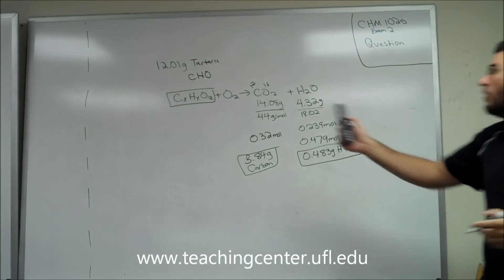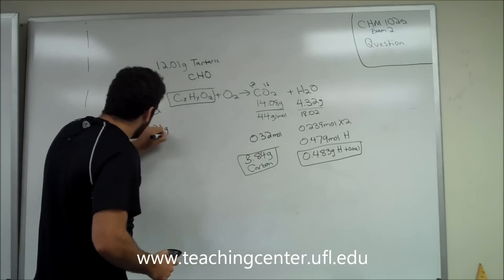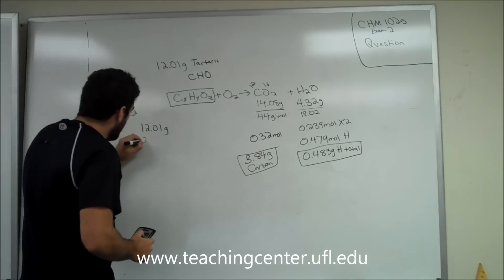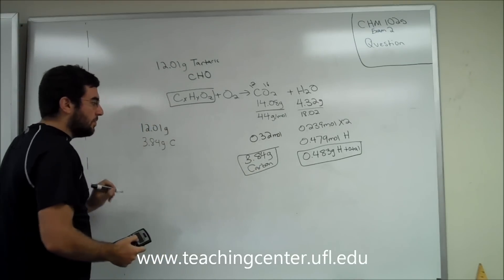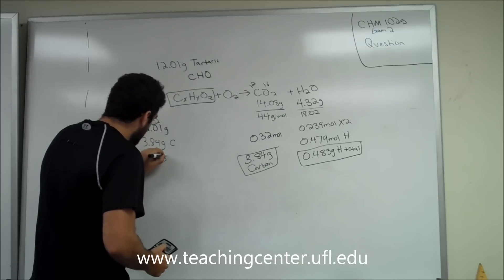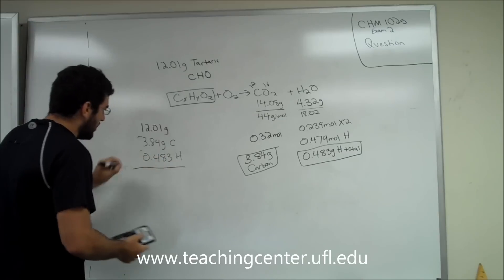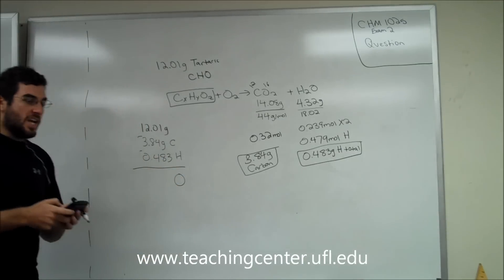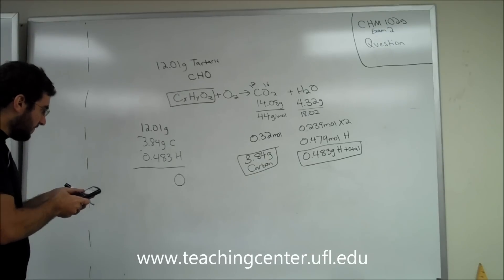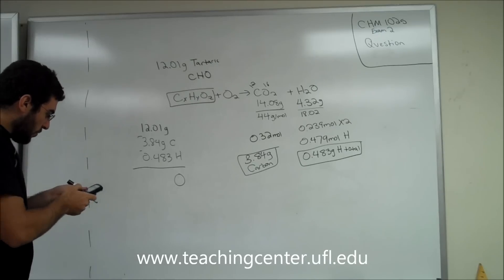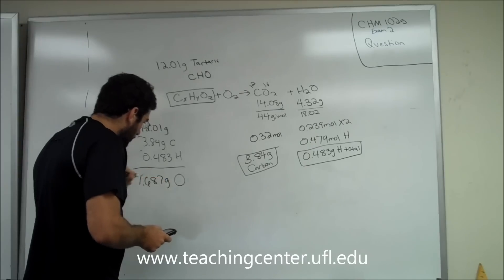So we know that our CHO compound has 12.01 grams total. We know that 3.84 of that is carbon, and we know that 0.483 is hydrogen. So if we subtract both of these from the total, we can figure out how much is oxygen. So if we do 12.01 minus 3.84 minus 0.483, we get 7.687 grams of oxygen.